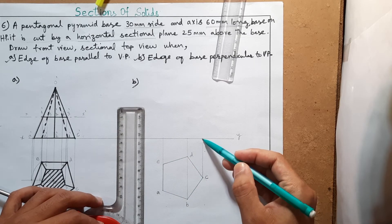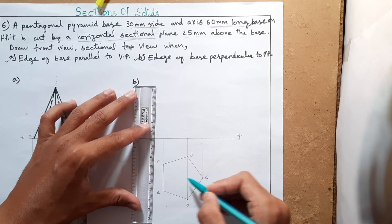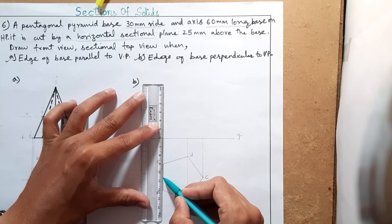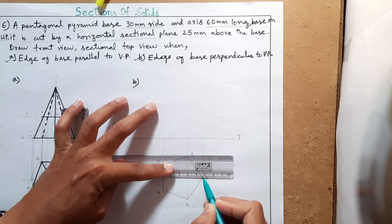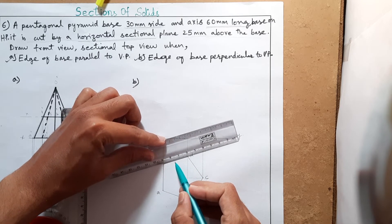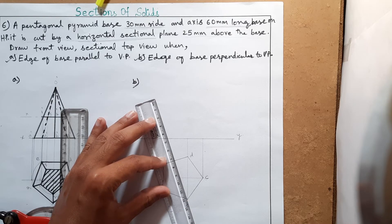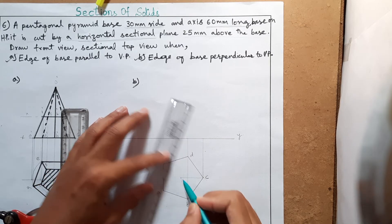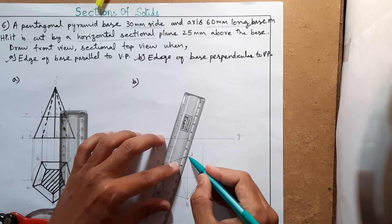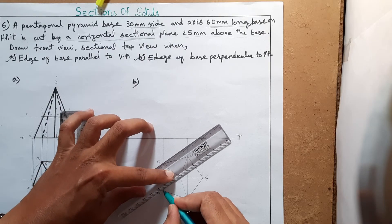All points are projected onto the XY line. To locate the center, take the midpoint of one base line and join with the opposite corner. Then take the midpoint of another line and join with the opposite corner — their intersection is the center. Join all visible slant edges from the center to each corner, as visible in the top view.